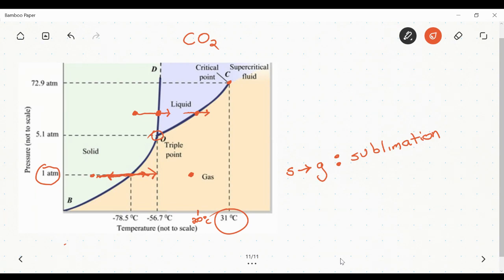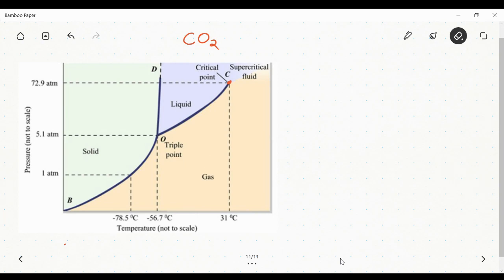The only other thing I want to discuss about this diagram is a difference in slope in what we call the solid-liquid equilibrium line. And the line that I'm specifically talking about right now is right here. And it's very slight, but I want you to notice that it's different than what we saw with water.